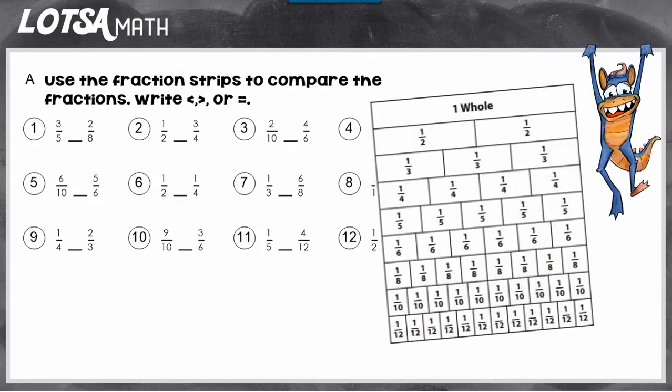Let's look at number one. We have three fifths and two eighths. If I use the fraction strips, I can start by finding how much three fifths is. So this is one, two, three fifths, and then two eighths, I would find two of the eighths.